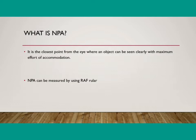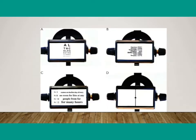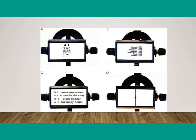We can measure both NPC and NPA by using the RF ruler. This is the test slide of the RF ruler. There are different types of charts given. You can see there is a reduced Snellen chart, a near chart, a line, and another chart. To measure the NPC we use this line, and to measure the NPA we can use the reduced Snellen or the near chart.